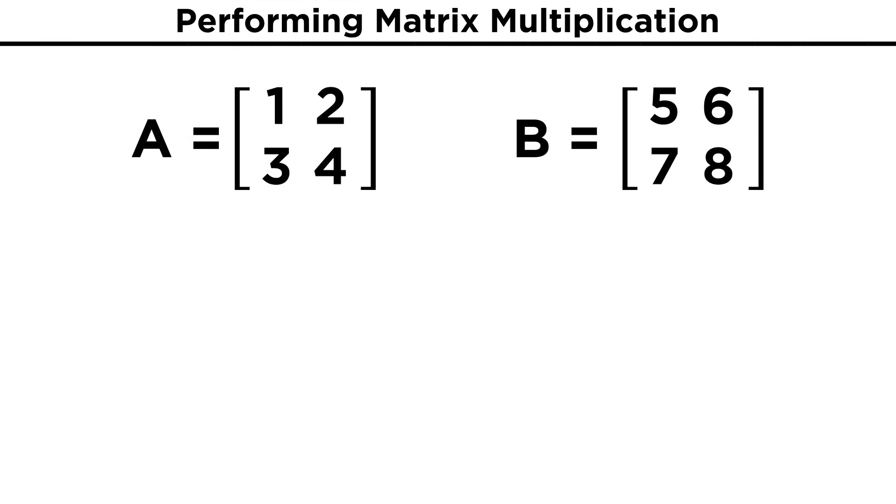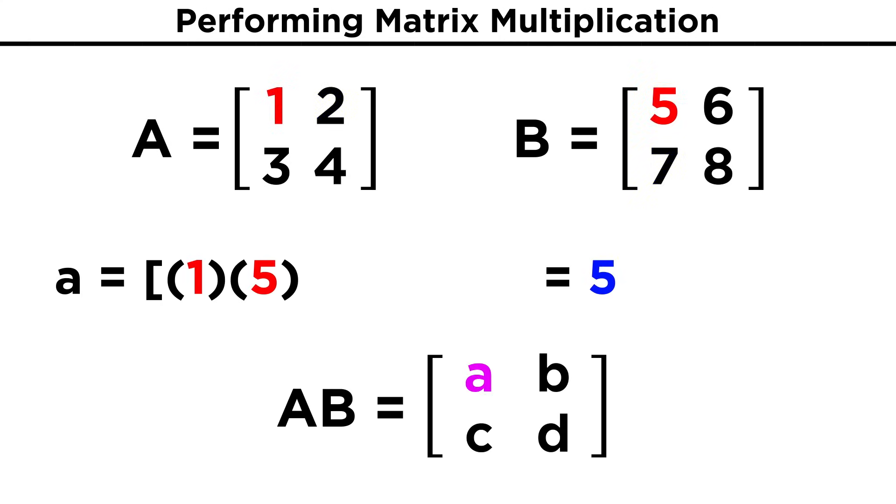Let's start with a pair of simple two by two matrices: one, two, three, four, and then five, six, seven, eight. The way we will get the product is by taking the first row of the first matrix and the first column of the second matrix and doing some multiplication. One times five is five, and two times seven is fourteen. Five plus fourteen is nineteen, so that goes in the first entry of the product matrix.